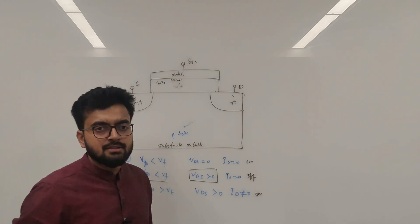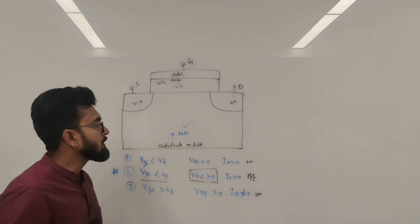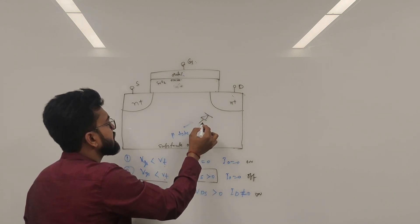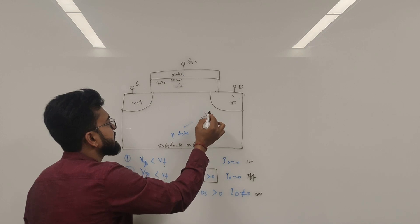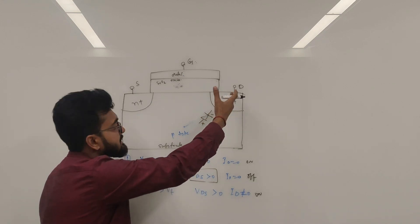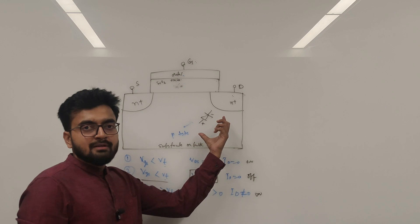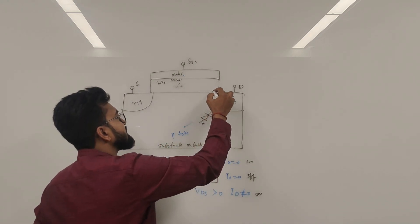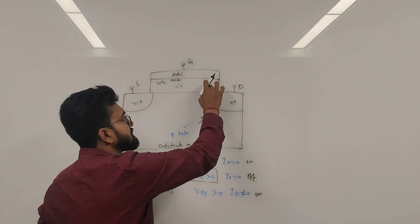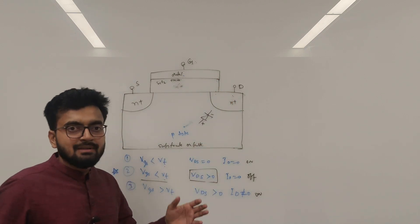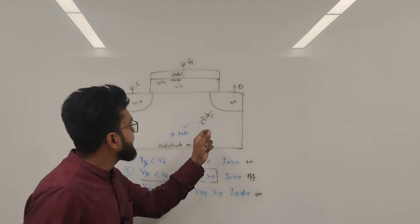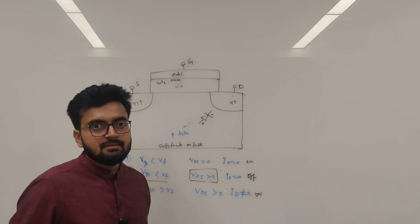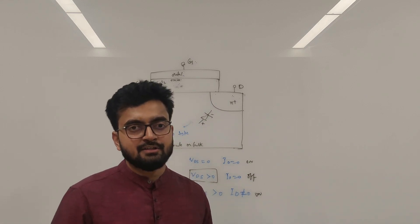There are two ways to look at it. One is we can draw the diode model. If you draw the diode model, we have positive and negative terminals, and since the drain is at higher potential, this diode is reverse biased. Similarly, we have a PN junction diode at this point, and that will also be reverse biased when we apply a drain voltage higher than the gate voltage — the drain potential is higher than the gate.